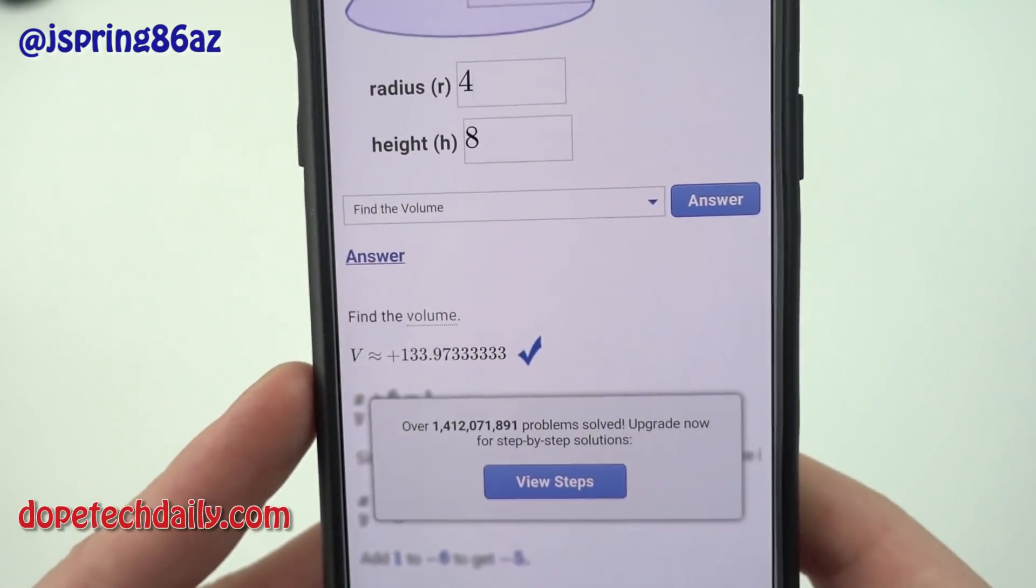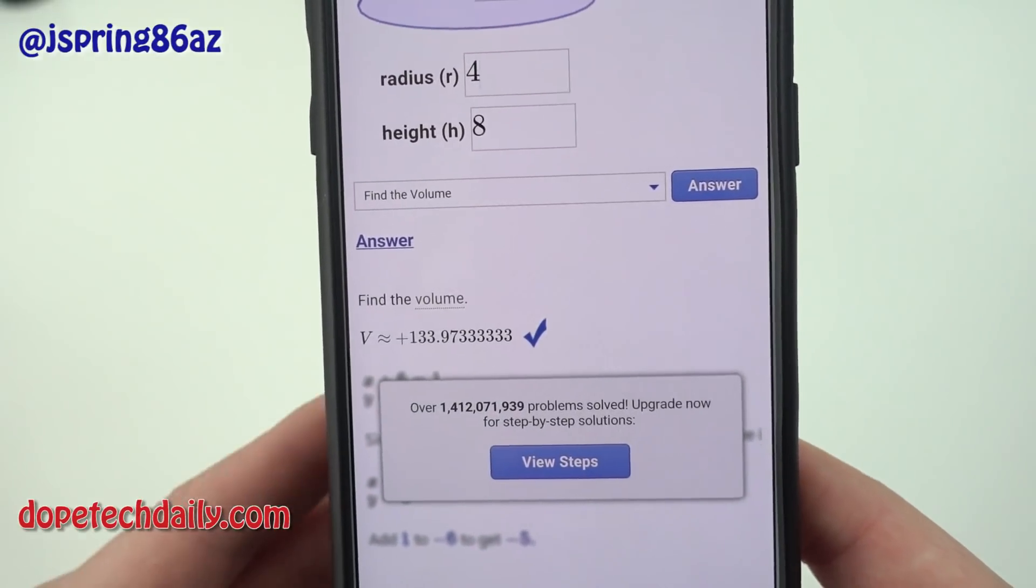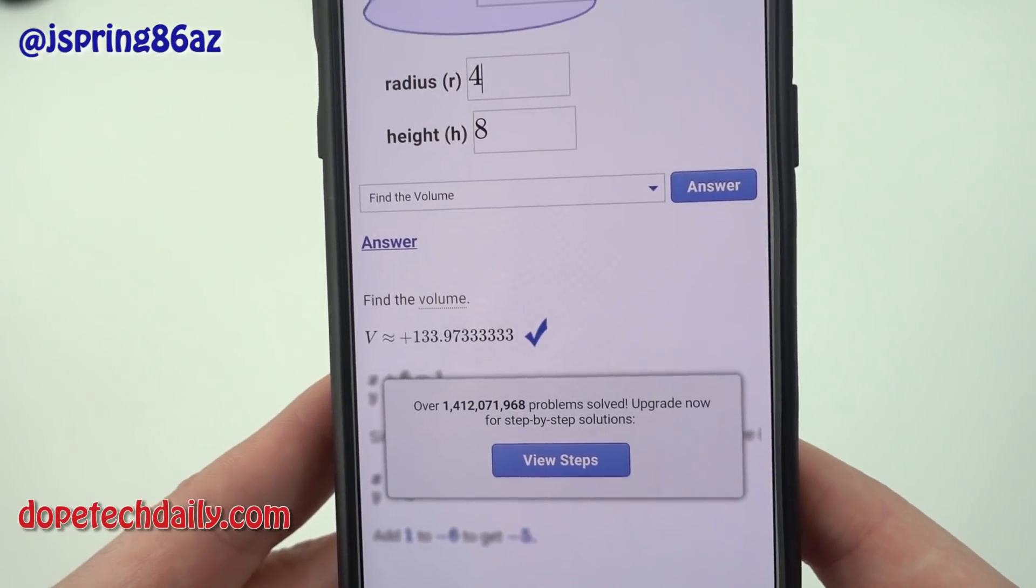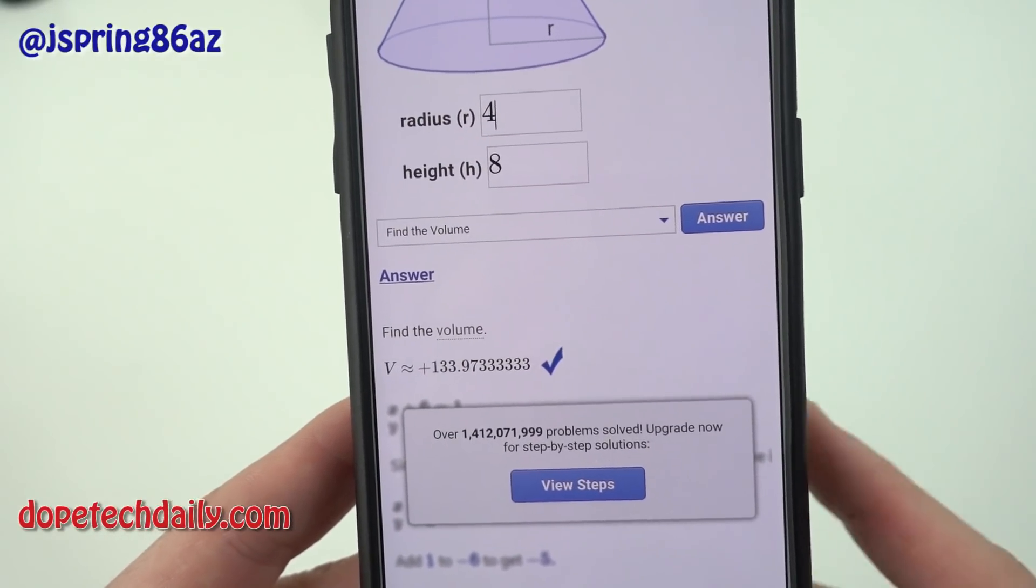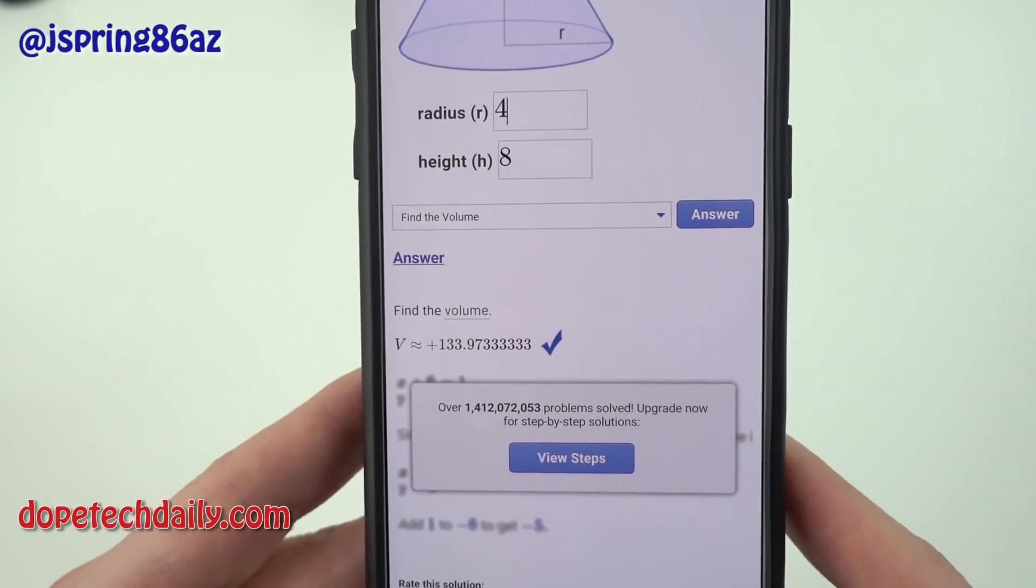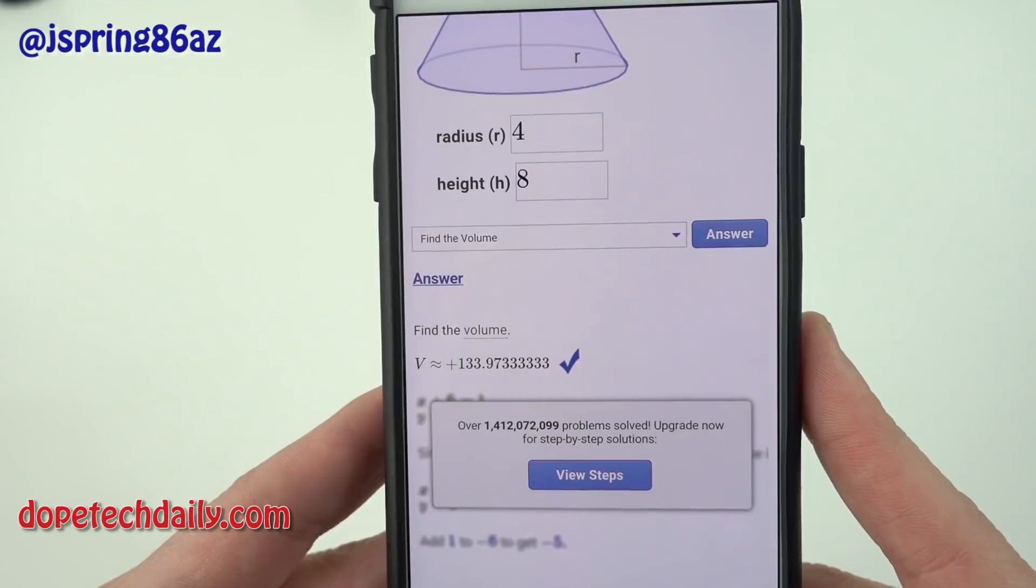The downside to this of course is that you're not actually going to get the steps unless you pay for the premium. But it is a great way to check your homework if you have some questions about whether or not you did a problem correctly on the homework you can go right here and check it no problem.